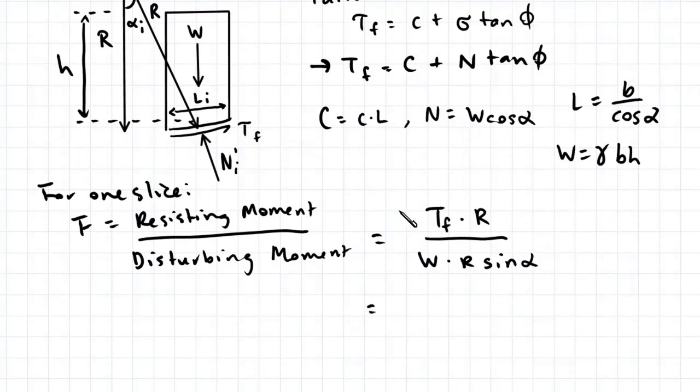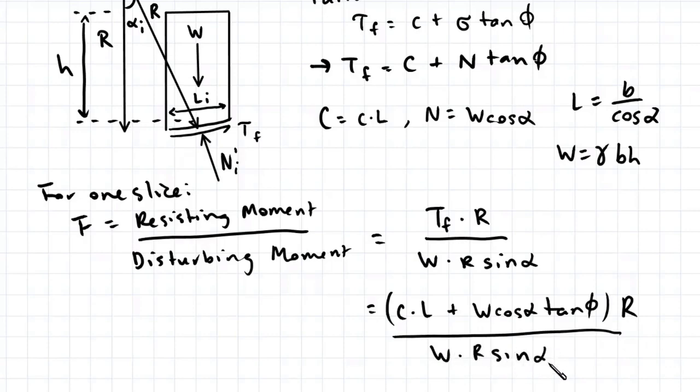If I substitute what TF stands for, that's C L plus W cosine alpha tan phi multiplied by R divided by W R sine alpha. In this case, the radius in the numerator and denominator both cancel out. This expression gives us the factor of safety for a single slice.